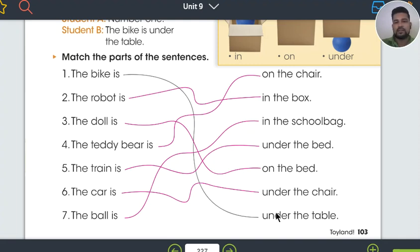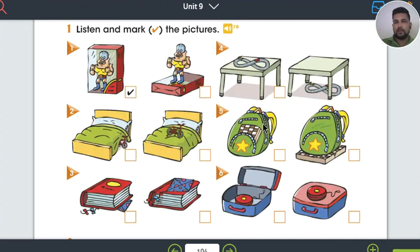The bike is under the table. The robot is in the box. Where is the doll? The doll is... Where is the teddy bear? Where is the train? Where is the car? Where is the ball? Great. Awesome.